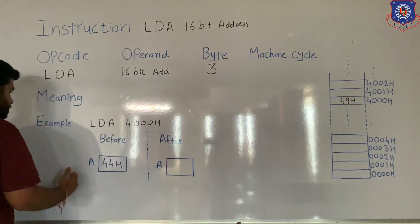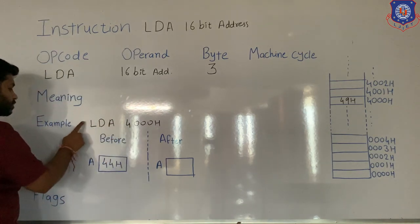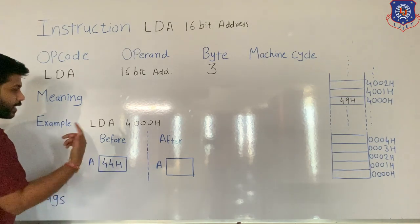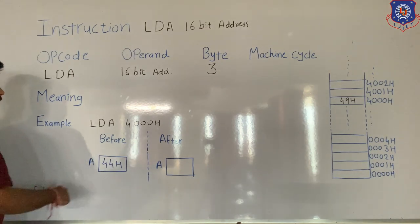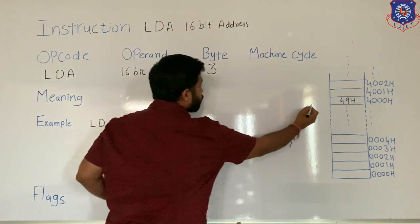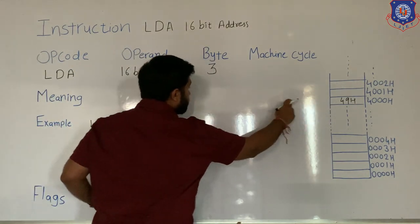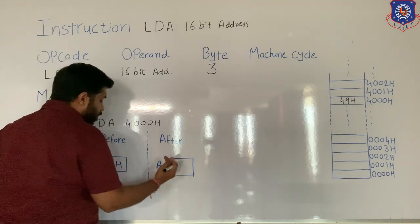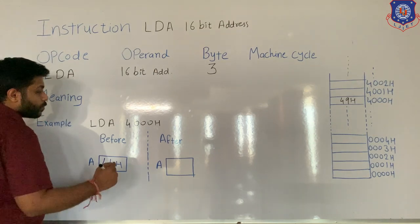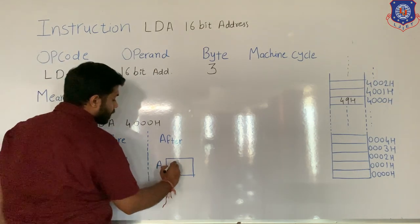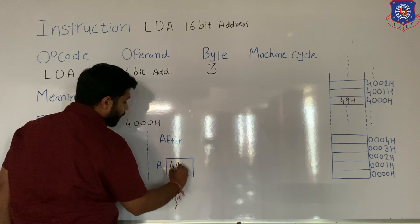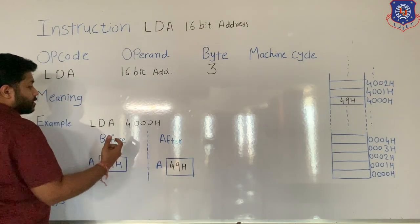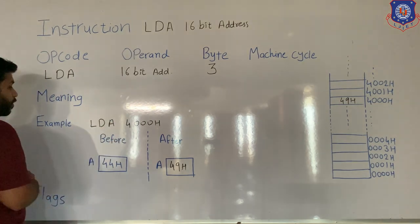Before the execution of this instruction, in the accumulator 44H is present. After the execution, the data which is stored in 4000H will be transferred to the accumulator. Previously 44H was present — it will be overwritten, and in the accumulator the new value will be 49H. This is the example of this instruction.